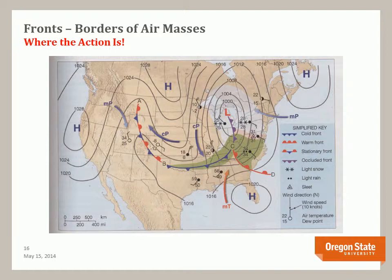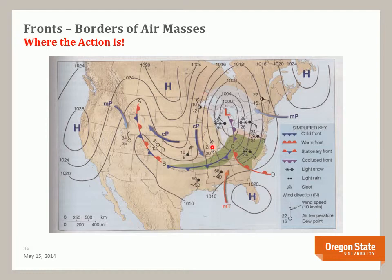We are now on to weather fronts. Air masses are fine and good, but the real weather action occurs at the boundaries between air masses. This is where air masses of different temperature and humidity clash, resulting in the development of some very interesting weather phenomena. This weather map shows the location of maritime polar and continental polar air masses, four different types of fronts, location of high and low pressure areas, contours of the pressure values, and wind direction, wind speed, and cloud cover.